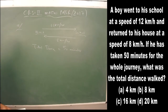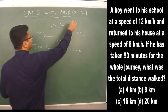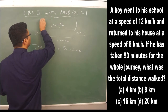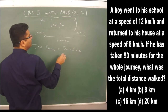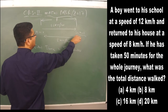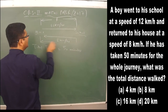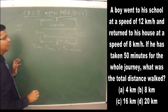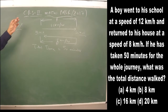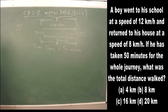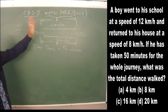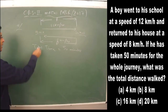The question asks for the total distance walked. Total distance means the distance from home to school plus the distance from school back home. I will first calculate the one-way distance d, then multiply by 2 to get the total distance.